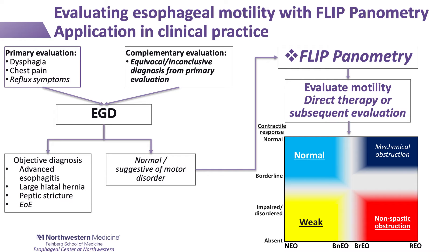However, other FLIP planometry findings may also direct the need for additional evaluation, which may include esophageal manometry. Notably, FLIP is also useful as a complementary tool — this is particularly relevant related to inconclusive manometries, such as the EGJ outflow obstruction classification on high-resolution manometry per the Chicago Classification version 4 recommendations.